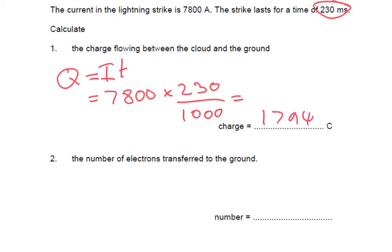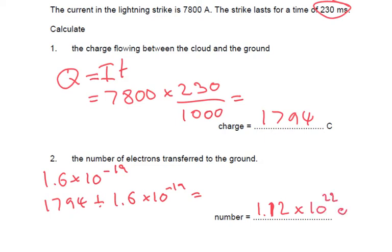The number of electrons transferred to the ground. Well each electron has got a charge of 1.6 times 10 to the minus 19. So if we do 1794 divided by the charge of an electron, it's going to tell us how many electrons we need. And I get an answer of 1.12 times 10 to the 22 electrons.